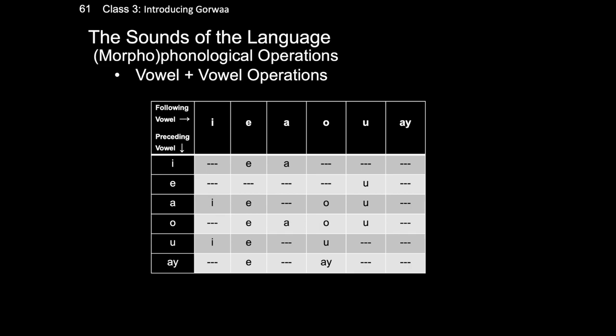Vowels on the other hand undergo coalescence. This is represented in a chart where vowels in the left-hand column are the first vowel in a two-vowel combination and vowels on the top row are the second vowel. The result is the vowel listed in the intersection of the two. Cells with blanks indicate that I don't have an example of the two vowels occurring together and therefore don't know what happens.